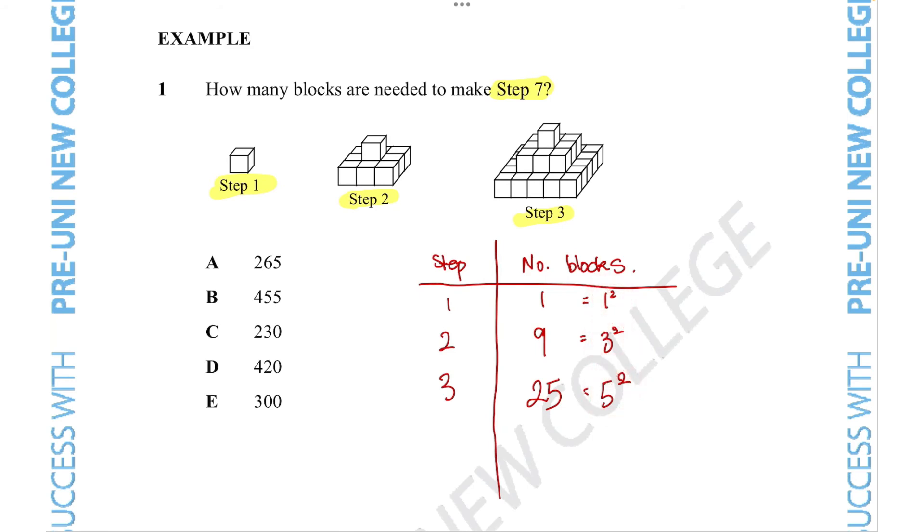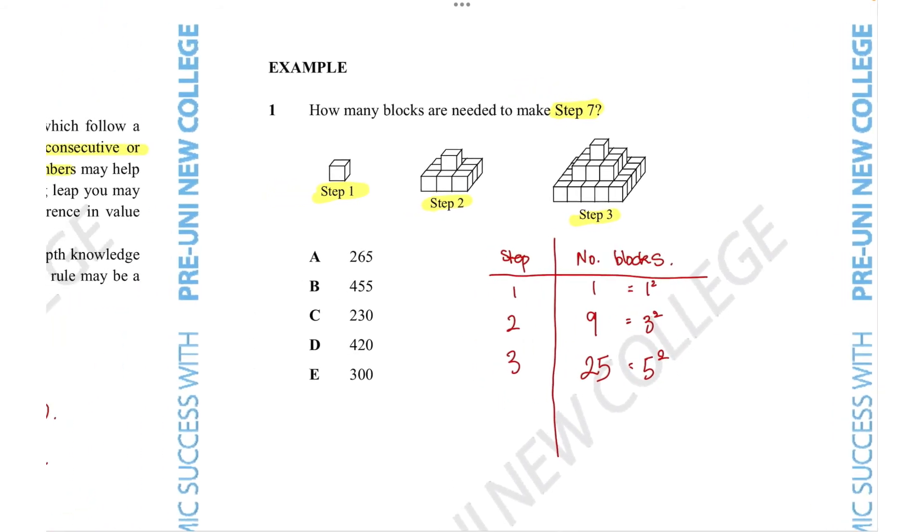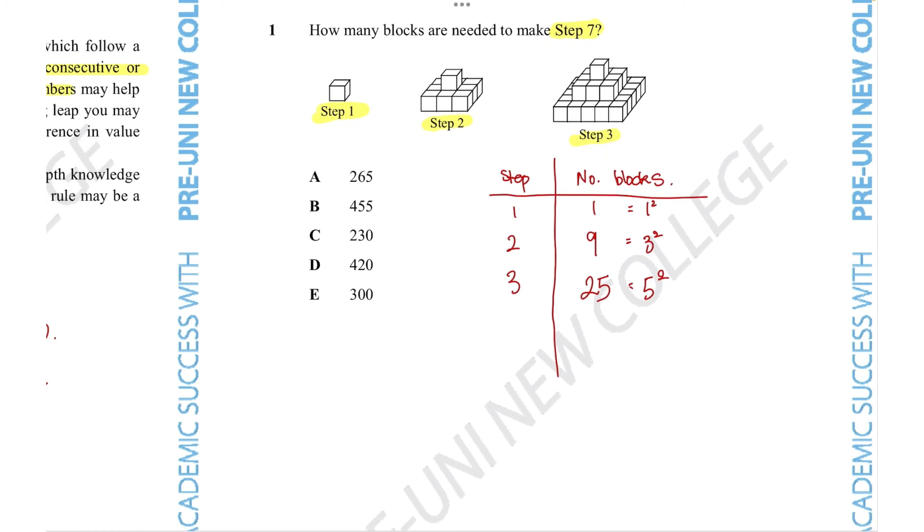We can use this information to figure out how many steps are needed for step 7. Step 4 will have 7 squared, which equals 49. Step 5 would have 9 squared, which equals 81. Step 6 should have 11 squared, which is 121. And finally, our last step should have 13 squared, which is 169.